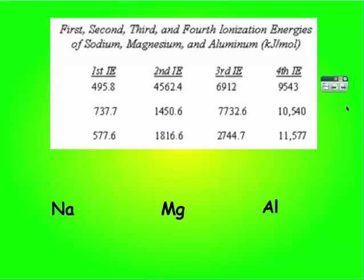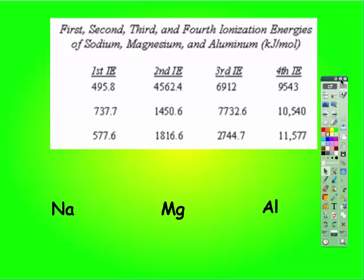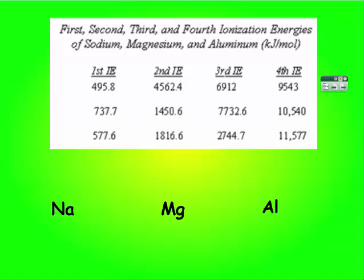You will likely see a question like this on tests and quizzes. Given ionization energy data for sodium, magnesium, and aluminum — first, second, third, and fourth — you must identify where the biggest gap is. For sodium, going from first to second ionization energy is almost ten times an increase, while second to third is not even double, and third to fourth is again not even double. So the biggest increase for sodium is between the first and second.